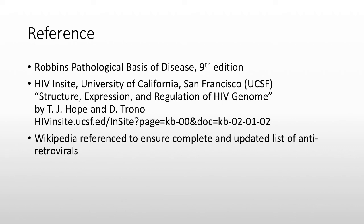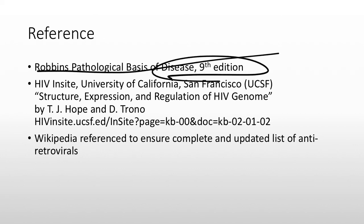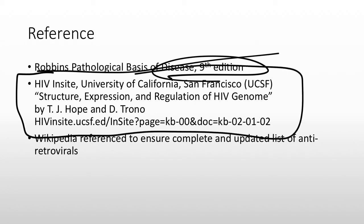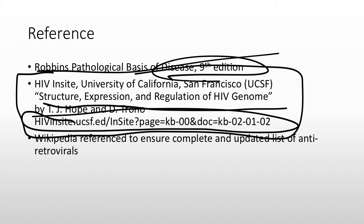References include Robbins' Pathologic Basis of Disease ninth edition, and the HIV InSite page from UC San Diego titled 'Structure, Expression and Regulation of the HIV Genome.' Wikipedia was used to verify the complete updated list of antiretroviral medications. Note that this antiretroviral section is not a full pharmacology lecture — each medication has its own mechanism, side effects, and details. For example, how didanosine causes pancreatitis is something you need to dig into separately. Thanks for watching — share this, give it a thumbs up, and don't forget to subscribe.